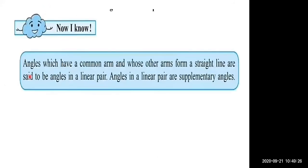Angles which have a common arm and whose other arms form a straight line are said to be angles in a linear pair. Angles in a linear pair are supplementary angles — this is an important point.